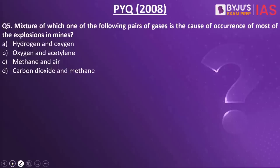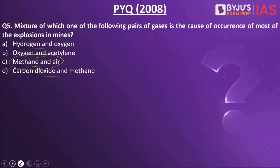Now let's look at the next practice question. A mixture of which one of the following pairs of gases is the cause of most explosions in mines? Hydrogen and oxygen, oxygen and acetylene, methane and air, or carbon dioxide and methane? The answer is methane and air. This is a previous year question from 2008. As part of the assignment, you have to put in the comment section why an explosion occurs when there is methane and air in that particular area.